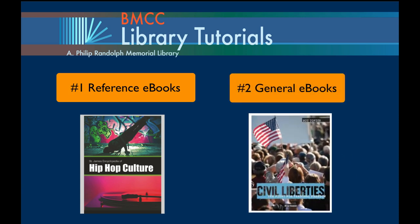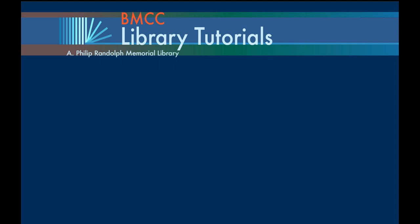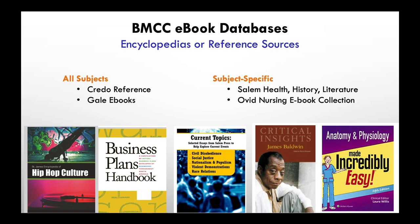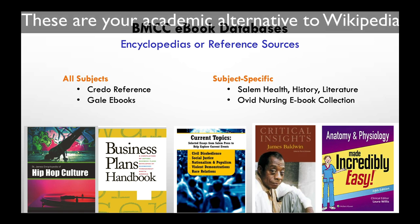If you need an academic alternative to Wikipedia, then use an encyclopedia or reference ebook. Credo Reference and Gale ebooks cover all subjects, whereas databases from Salem and Ovid are subject-specific, covering the areas of health, history, literature, and nursing.